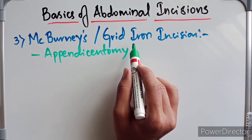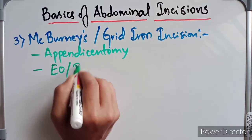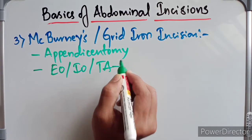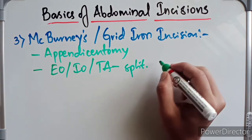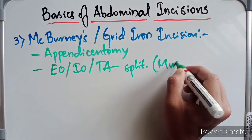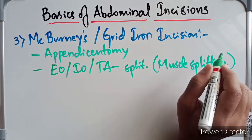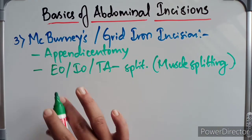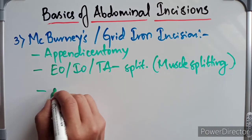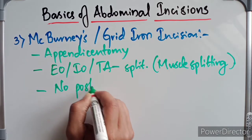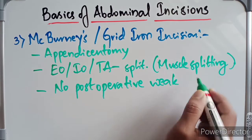The external oblique, internal oblique, and transversus abdominis muscles are all incised and split in line with their fibers — hence it is also termed a muscle-splitting incision. The transversalis fascia and the parietal peritoneum are also incised to open the abdominal cavity, and the incision is closed in layers. This incision has no post-operative weakness, which is the key advantage of McBurney's incision.